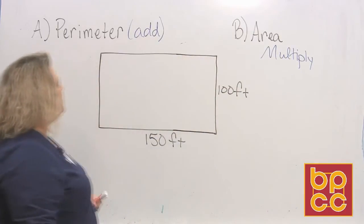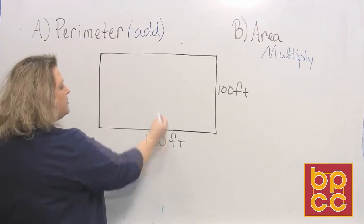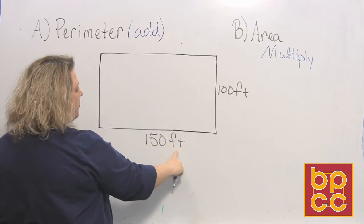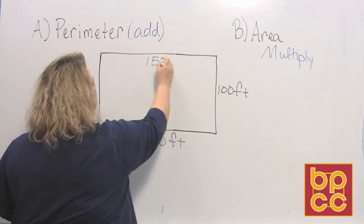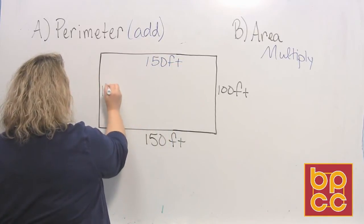So let's do part A first. Part A says to add together. Well, a rectangle opposite sides are equal. So if the bottom is 150, the top is 150. If the right side is 100, the left side is 100.